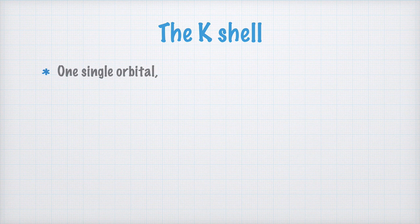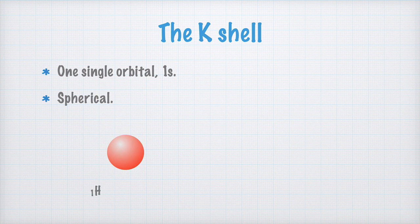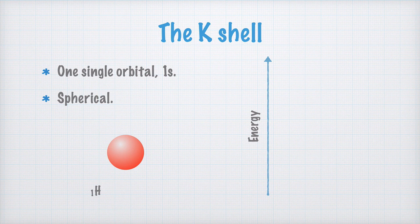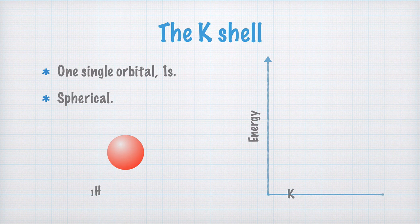Now, let's start by looking at the K-shell in more detail. It only has one orbital, and it's called 1s. It's spherical, as I showed you before. We first consider the hydrogen atom, which has the atomic number 1. We also draw a diagram here, to the right, with the energy level on the y-axis. When electrons are in the K-shell, their energy is as low as possible. We draw this energy level here, and write a K for the K-shell. The single orbital in the K-shell is called 1s, and in hydrogen, it contains a single electron.